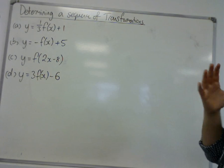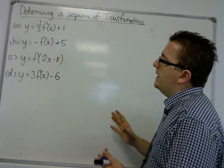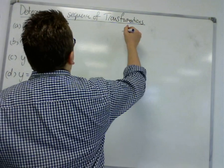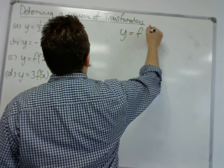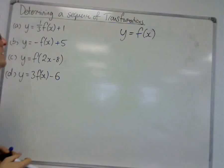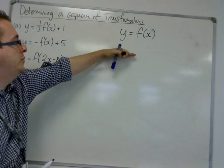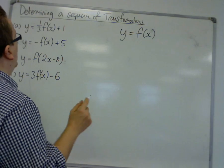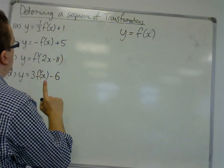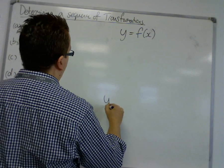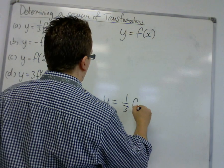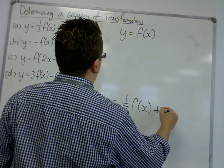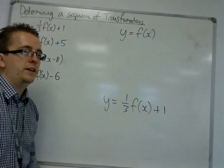Okay, so what we're saying here is that I've started off in each of these cases with y is equal to f of x. And I need to find the sequence of transformations that I need to go through. In each case, there will be two, that will allow me to arrive at the image, which in the first case is one-third f of x plus one.